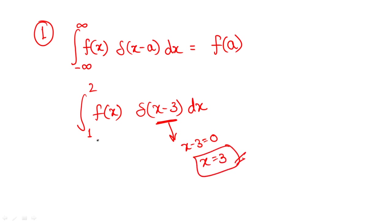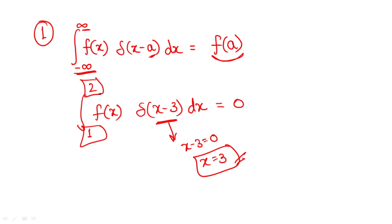Now, this value x equals 3 does not exist within the lower and upper limits — it is not between those two values — so the answer will be zero. You can directly write zero. When the limits are minus infinity to plus infinity, all values exist within the limits. But when the limits are different, you have to be careful about whether the value of x you get exists within the given limits or not.